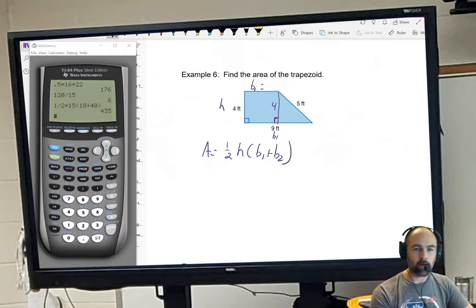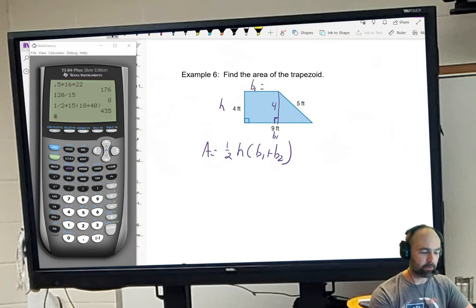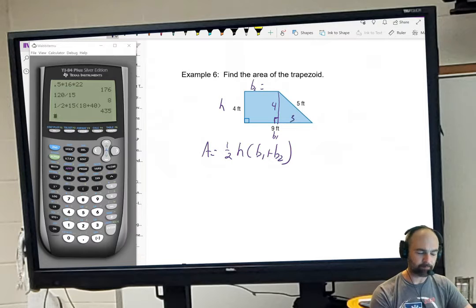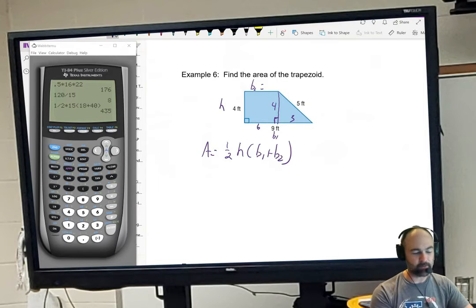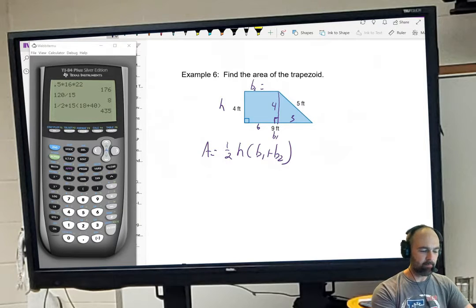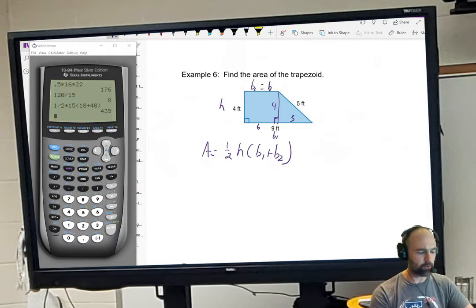Now I've got a right triangle with a hypotenuse of 5 and a leg of 4. Well, that's a Pythagorean triple: 3, 4, 5. So I know this piece is 3. Now, if that's 3, that means I had 6 left over on this side because I have to subtract the 3 out from the 9. It means that that rectangle goes across base two is going to be 6.